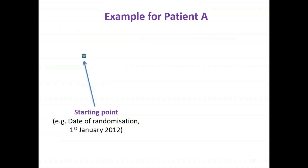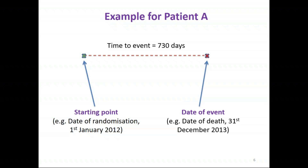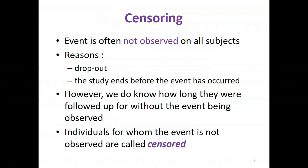Here's an example for patient A. They're randomised into a trial on the 1st of January 2012 — that's the well-defined starting point. The patient is then followed up during the trial and experiences the event of interest, which is death, on the 31st of December 2013. So the time-to-event for patient A is 730 days.